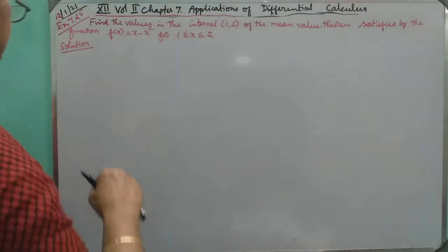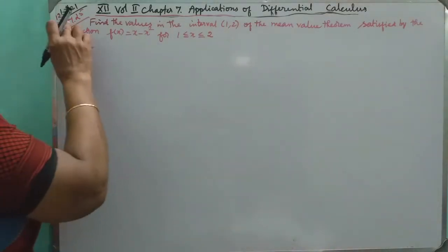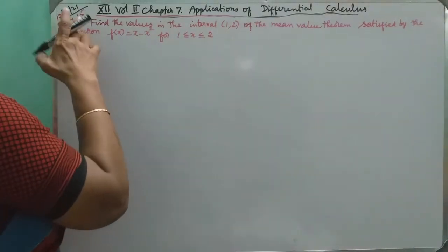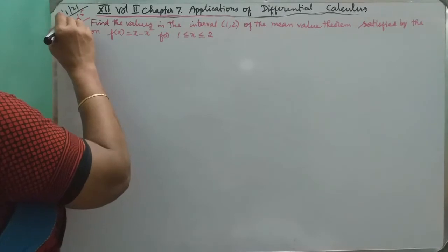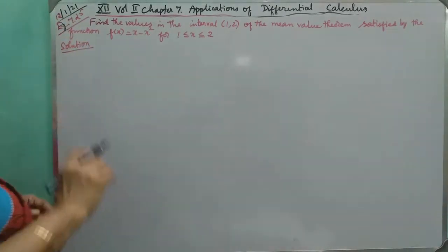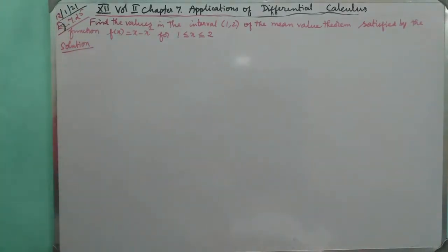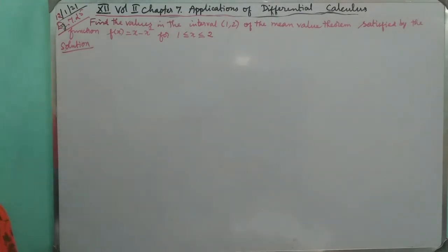Hello friends, example 7.25. Find the values in the interval [1,2] of the mean value theorem satisfied by the function f of x equal to x minus x square, for 1 less than or equal to x less than or equal to 2. So, this is the problem.